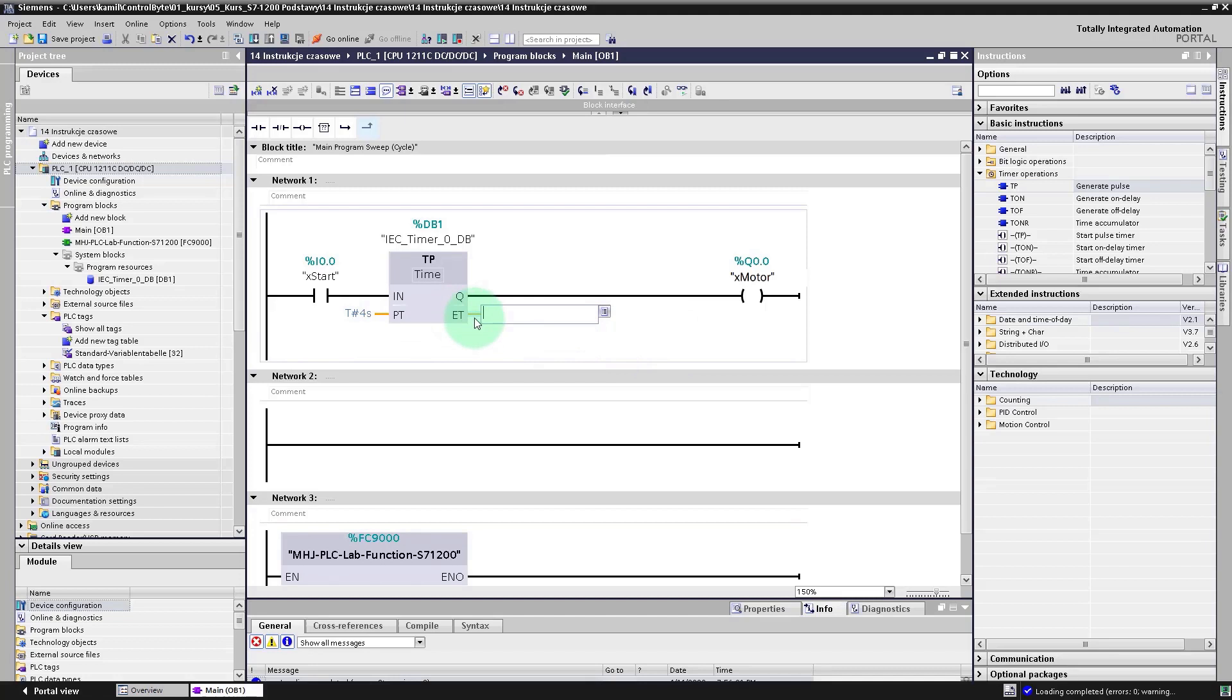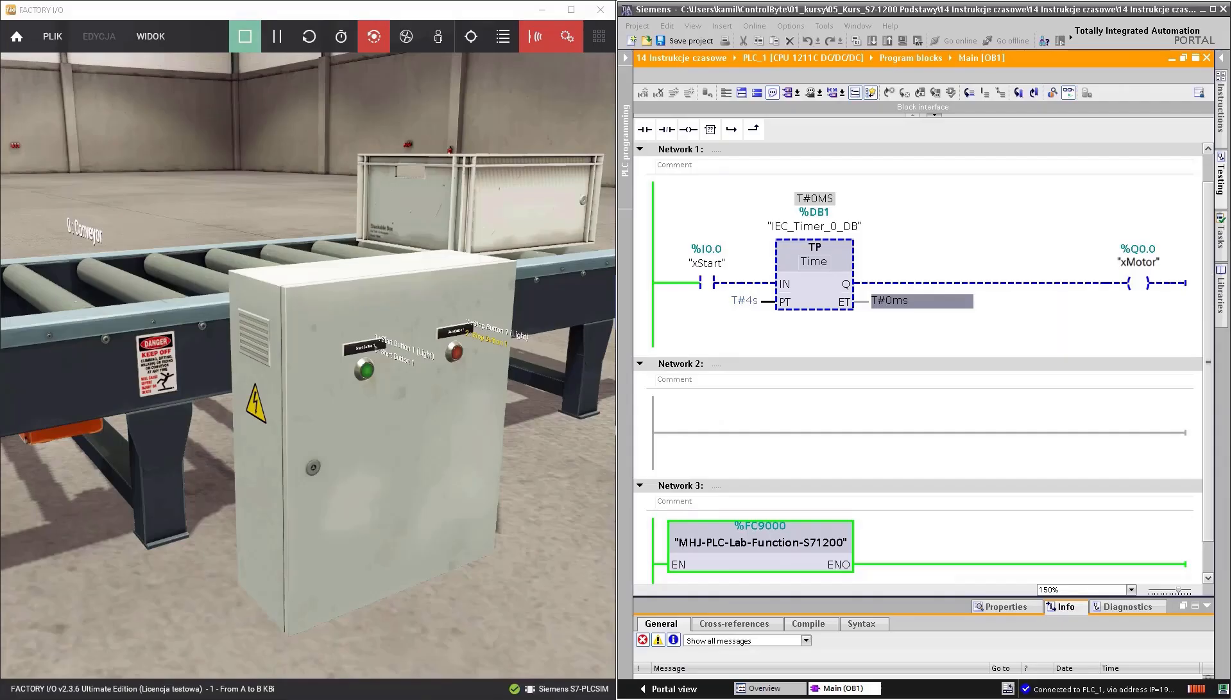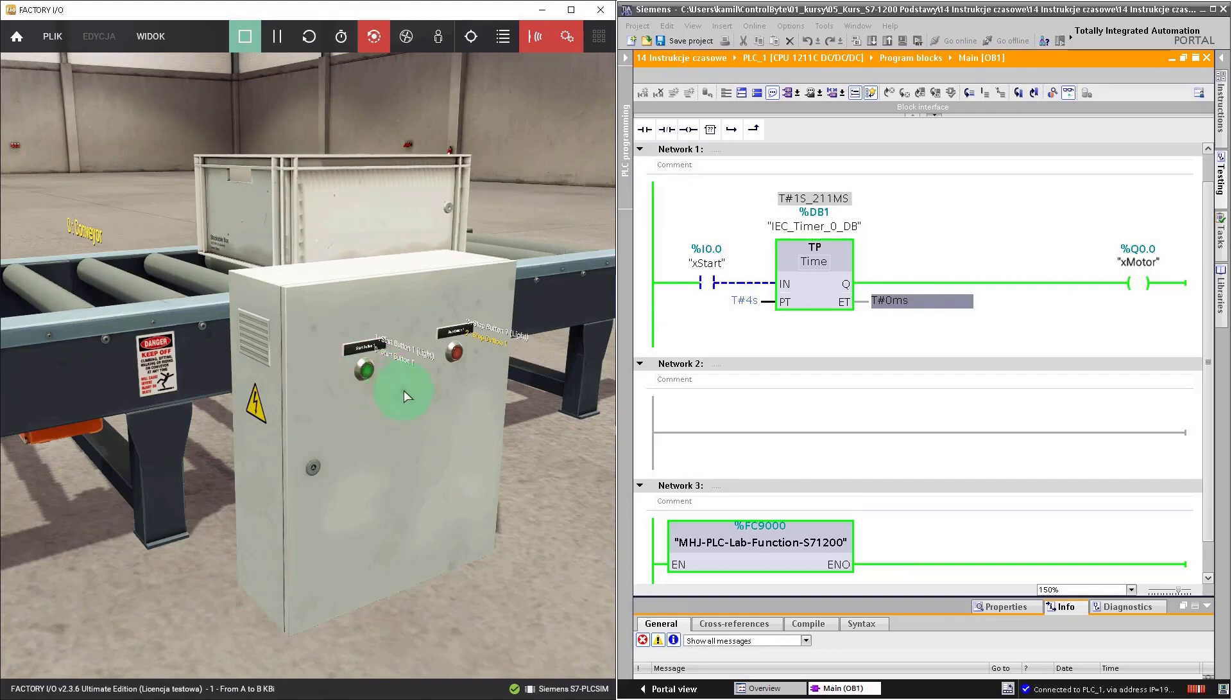You don't need to connect a variable to ET output. Just leave it empty. On the input marked as IN, we connected X start button, and on the output, we have X motor coil. Let's download changes to the PLC simulator. Let's observe the behavior of our system. I push on the start button, and after that, I release the start button immediately. The motor started and the container moved for exactly 4 seconds.